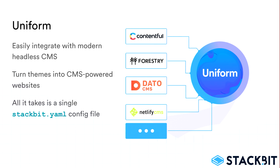Uniform enables Statbit to provision your themed content model with a growing selection of headless CMS. Statbit uses a powerful content model defined in your statbit.yaml configuration file to convert content, front matter, and data into the format your static site generator expects. There's no configuration needed with any of the CMSs — it's all automatic out of the box.